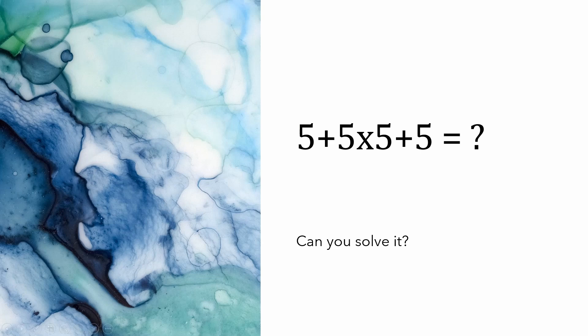Alright everyone, I've got a simple problem here. It's got some mixed operations in it — some multiplication and addition. Not a very difficult one, but it's one that I do see answered incorrectly quite a bit. And it's 5 plus 5 times 5 plus 5 equals what? Can you solve it?